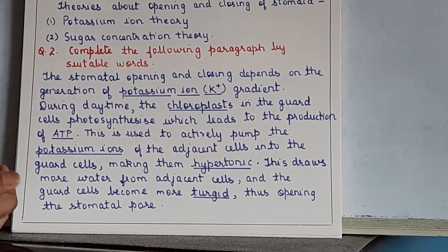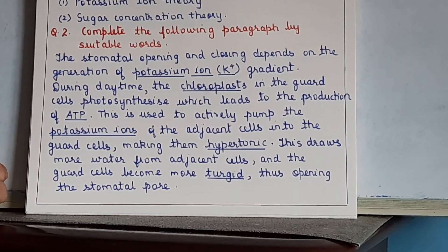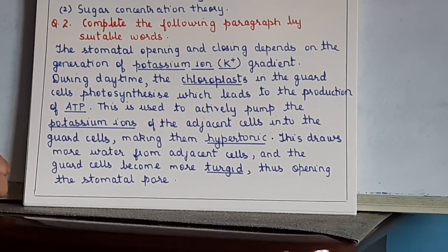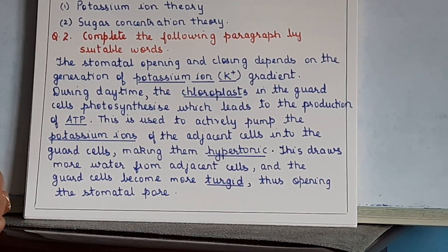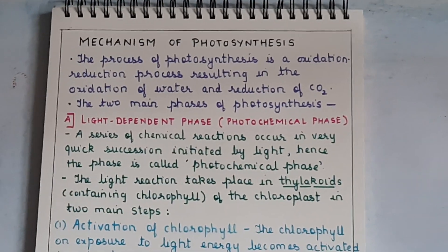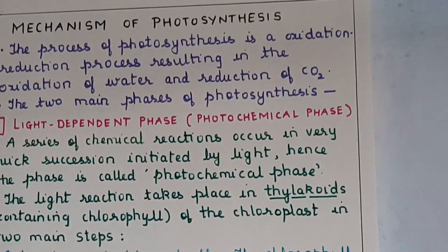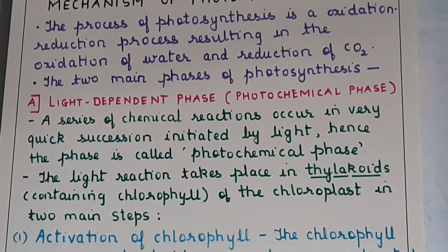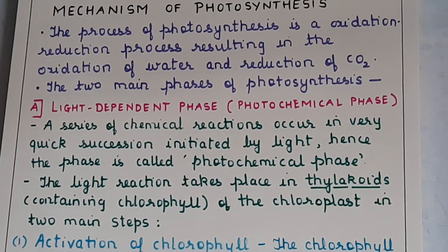We need the stomata to be open so that carbon dioxide — our raw material for photosynthesis — can enter through them. Now let us see the mechanism of photosynthesis.